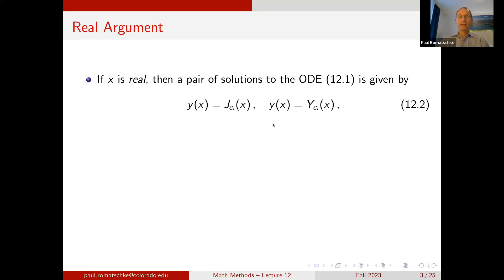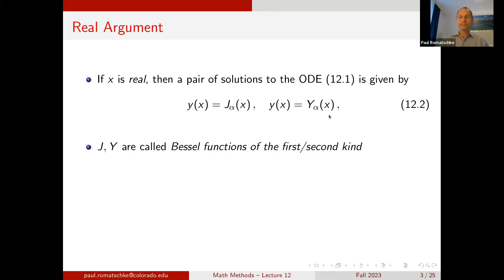If x is real, then since this is a second-order ordinary differential equation we need two solutions. These are chosen to be denoted J_α(x) and Y_α(x). J is called the Bessel function of the first kind and Y is called the Bessel function of the second kind.